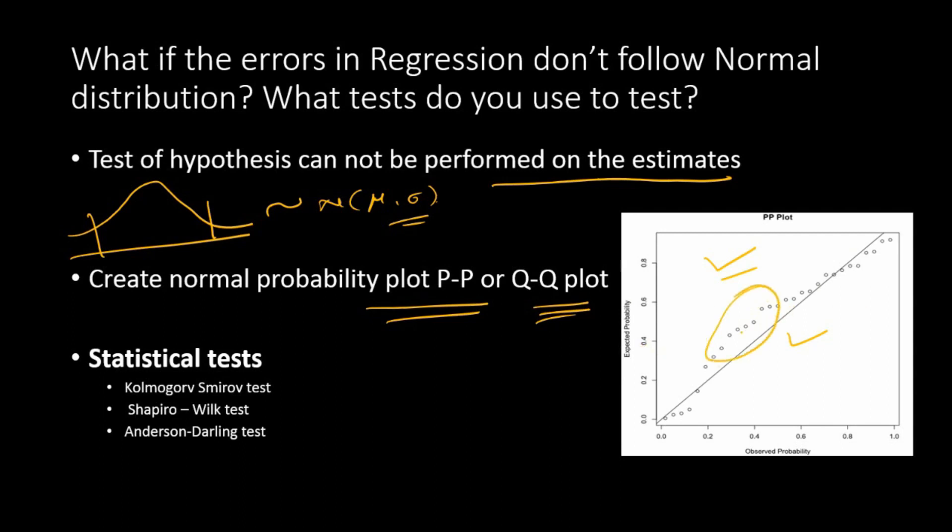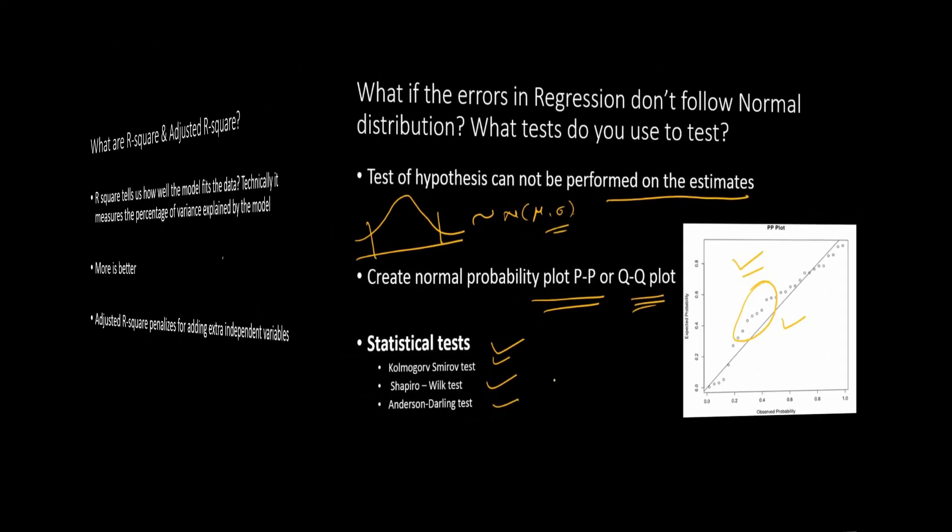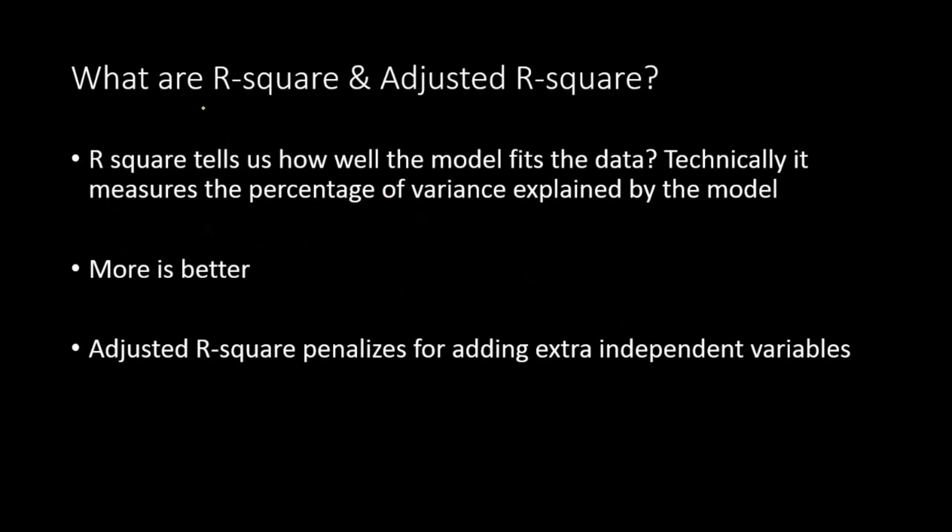There are also statistical tests available like Kolmogorov-Smirnov test, Shapiro-Wilk test, and Anderson-Darling test which can also be performed to find out if the errors are normally distributed or not. Most of the time, if your continuous variables are normally distributed, then automatically the errors will also be normally distributed.